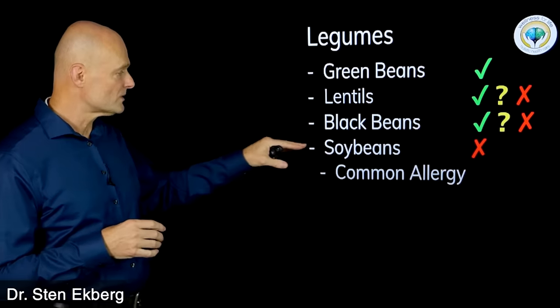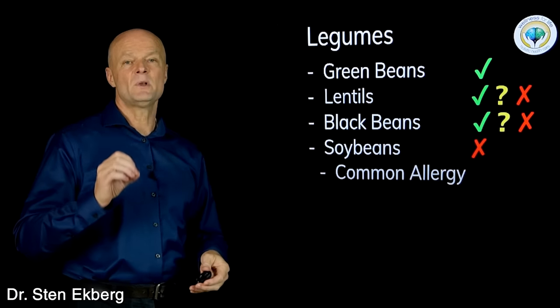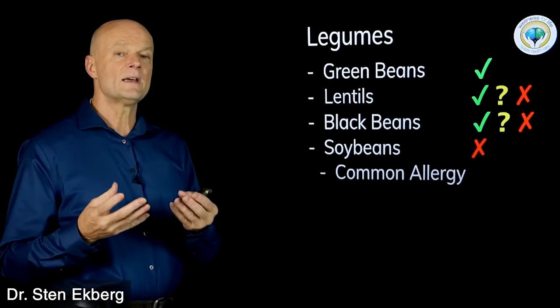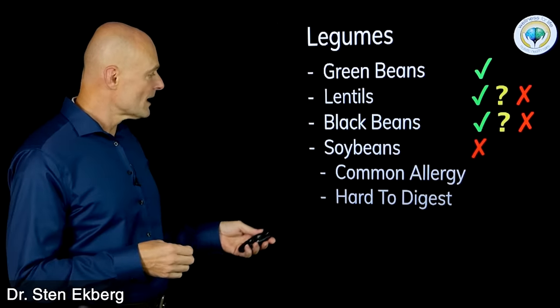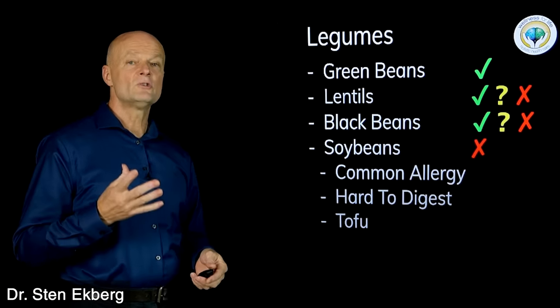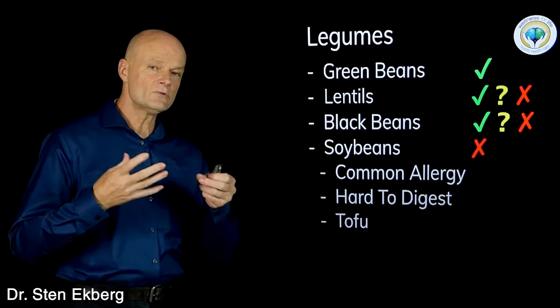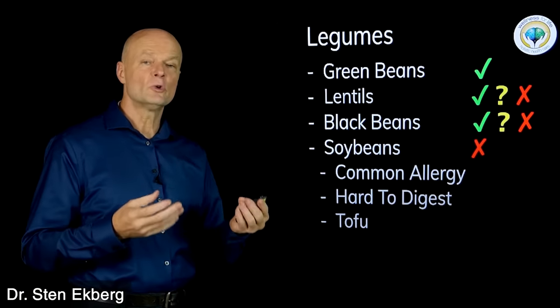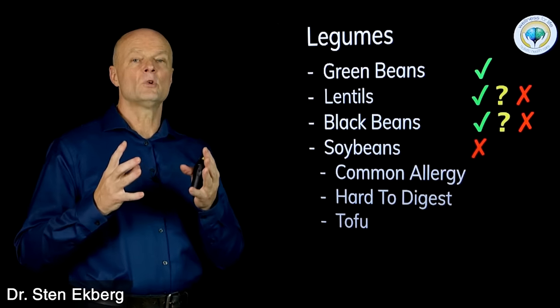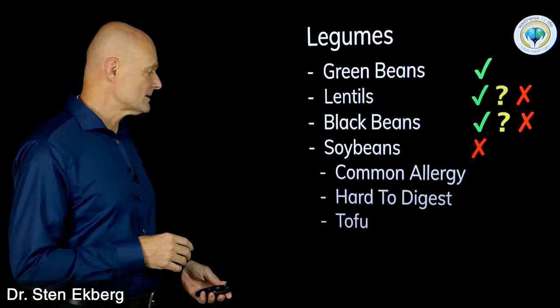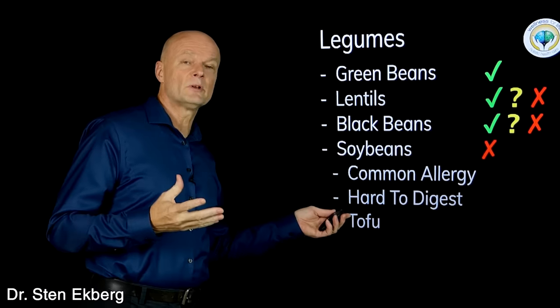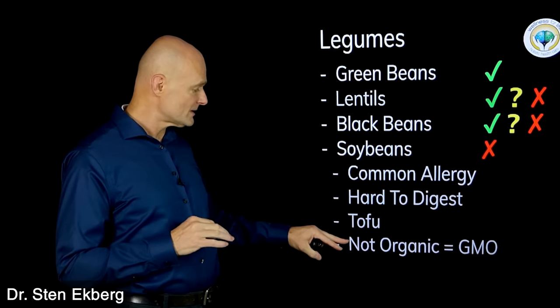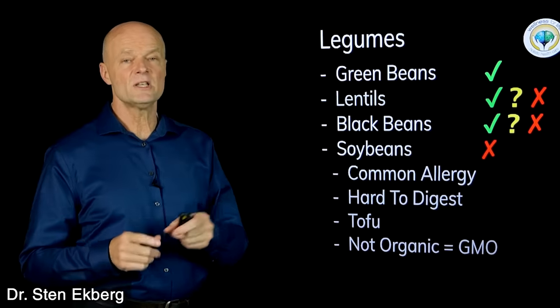Soybeans is one of the most common allergies, very difficult to digest for most people, especially the way they process it and include it as filler protein in almost every product. It's difficult to digest unless you turn it into tofu. All the traditional cultures in Asia that eat a lot of soy typically eat it as tofu or some other prepared or fermented form. If you do eat tofu, which is very popular as a protein source for vegetarians, I would strongly suggest you get the organic version, because if it's not organic you're pretty much guaranteed it's a GMO food.